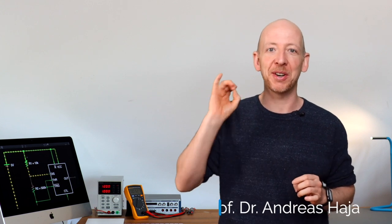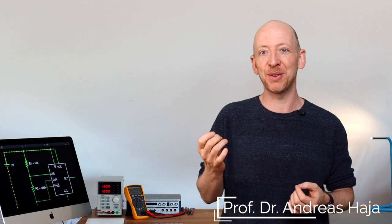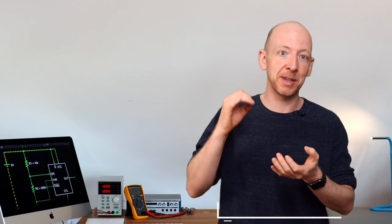In this video I will explain how electric current is defined and how you can derive voltage scientifically correct from the electric charge and from some material properties of a conductor. By the end of this video you will understand how current and voltage are connected by a simple equation, and how Ohm's law results almost automatically from this equation.